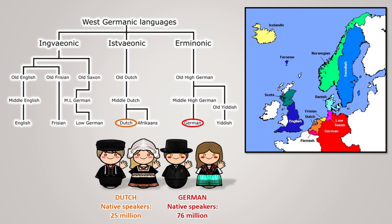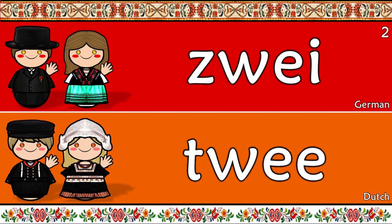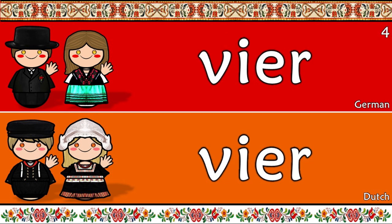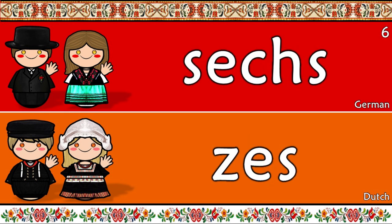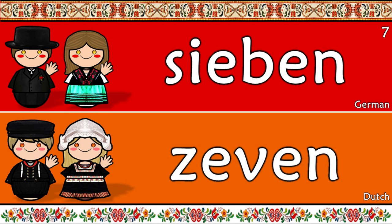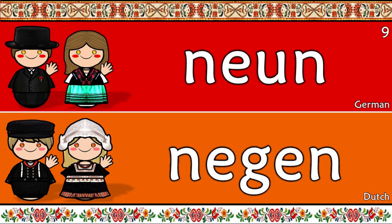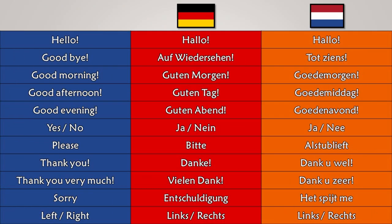Let's listen to the beautiful sounds of their languages. Numbers one through ten in German and Dutch: one, two, three, three, four, five, five, six, six, seven, seven, eight, eight, nine, nine, ten, ten.